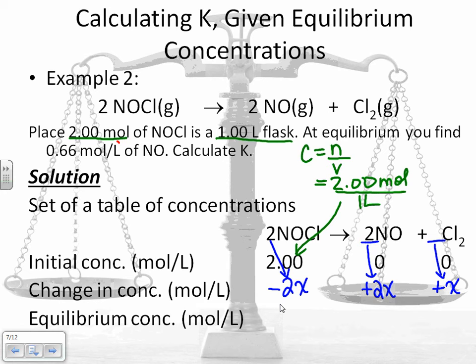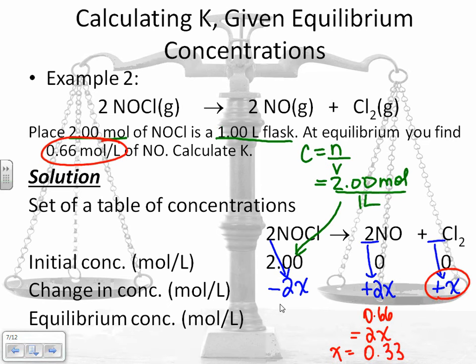Then it also said in the question that at equilibrium, I have 0.66 moles per liter of NO. That is equal to 2x. Because I just said I'm going to go from 0 to 2x. When I add them up, that's 0.66. That means x equals 0.33. So this has now given me my concentration for Cl2, because my Cl2 is just x. So this is 0.33. And my final concentration for NOCl, my reactants, is going to be 2 minus 2x, or 2 minus 0.66, or 1.34.